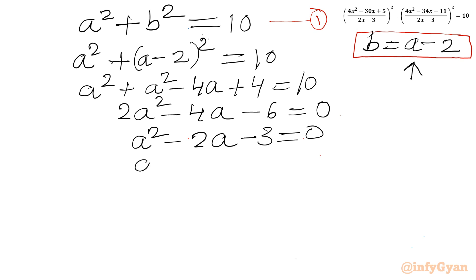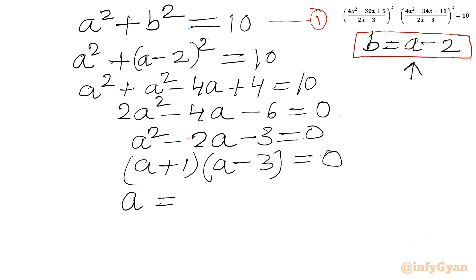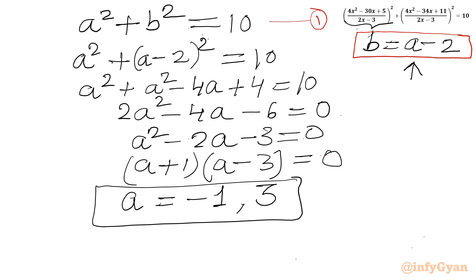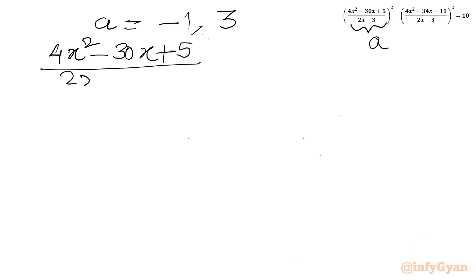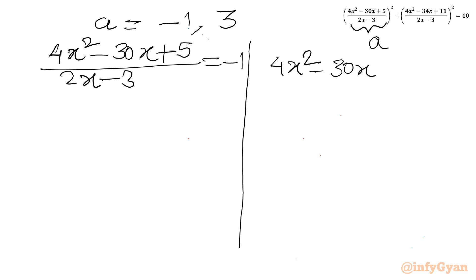We can factor easily: (A + 1)(A minus 3) equals 0, so A equals negative 1 or A equals 3. Now A was our substitution for the first bracket. Setting up the two equations: (4x² minus 30x + 5)/(2x minus 3) equals negative 1, and (4x² minus 30x + 5)/(2x minus 3) equals 3.